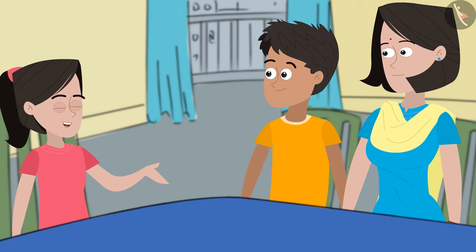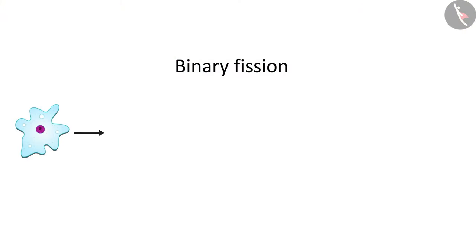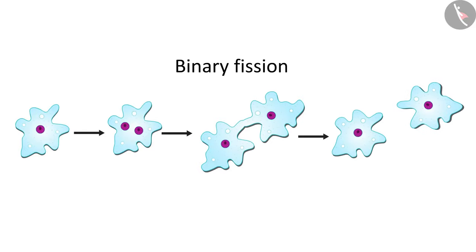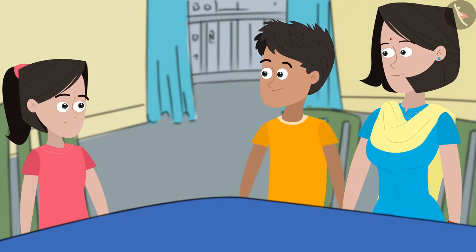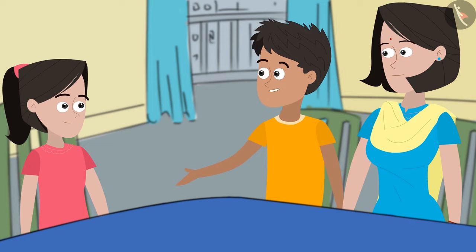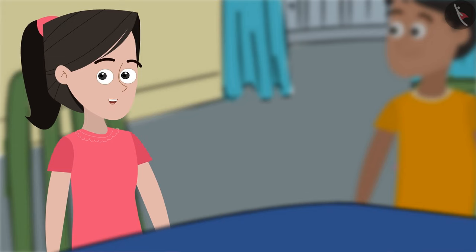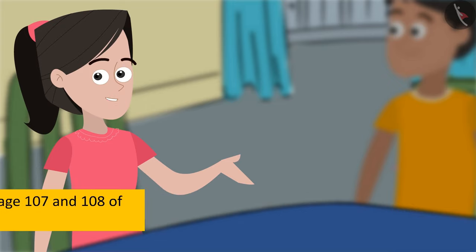This sounds amazing. So does amoeba clone this way too? No, Sanya. Amoeba reproduces through binary fission. How does that work? I'll leave it up to you to research. Friends, can you research on this using your textbooks and let me know? You can refer to pages 107 and 108 of your textbook for the same.